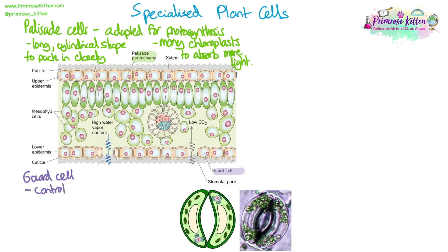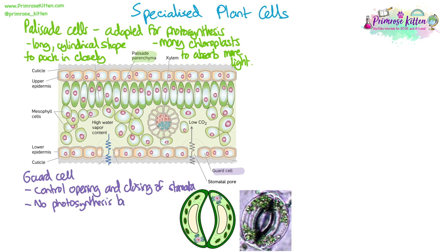Guard cells are found either side of the stomatal pores. Their function is to control the opening and closing of the stomata, meaning they play a role in gas exchange and also in transpiration — the loss of water through the plant. They don't carry out photosynthesis, but they do contain chloroplasts. Throughout the day, changes in light intensity are what control the opening and closing of the stomata.